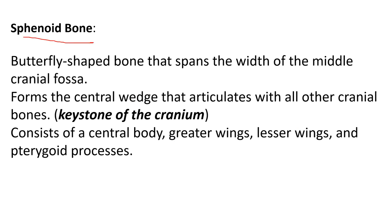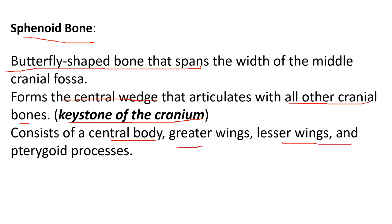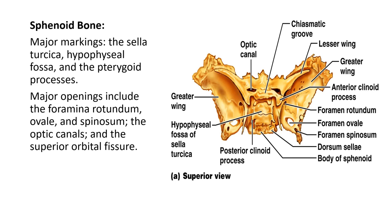The sphenoid bone is a butterfly-shaped bone. It spans the width of the entire cranial fossa and forms a central wedge that articulates with all other cranial bones — hence it's called the keystone of the cranium. It consists of a central body, greater wings, lesser wings, and the pterygoid processes, which are important for muscles of the TMJ. Looking from the top down, you can see the entire structure. Those pterygoid processes coming down are part of this view.